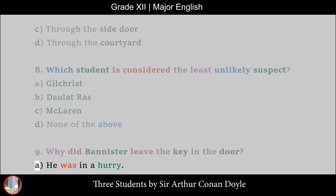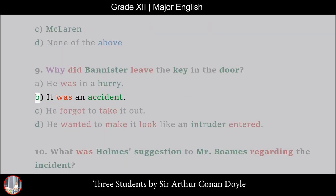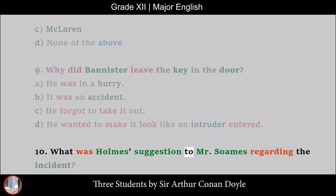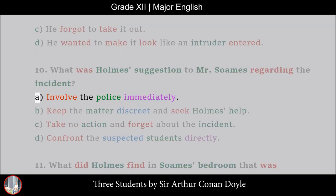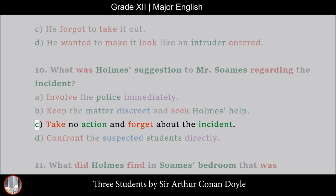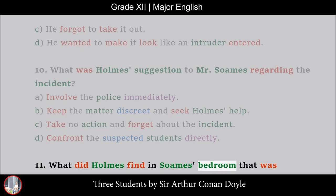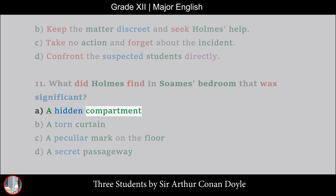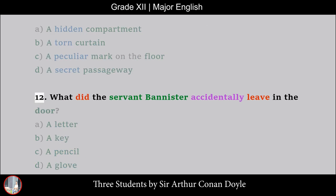9. Why did Bannister leave the key in the door? A. He was in a hurry, B. It was an accident, C. He forgot to take it out, D. He wanted to make it look like an intruder entered. 10. What was Holmes' suggestion to Mr. Soames regarding the incident? A. Involve the police immediately, B. Keep the matter discreet and seek Holmes' help, C. Take no action and forget about the incident, D. Confront the suspected students directly. 11. What did Holmes find in Soames' bedroom that was significant? A. A hidden compartment, B. A torn curtain, C. A peculiar mark on the floor, D. A secret passageway. 12. What did the servant Bannister accidentally leave in the door?